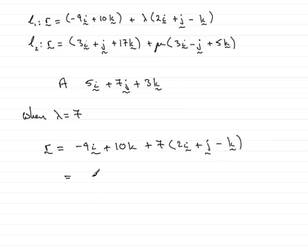And if you work that out, you've got minus 9i plus 14i is clearly 5i, so that's looking good. We know that we should get 7j when lambda equals 7 because we just have no j's here, and that's 7j, so 7j.